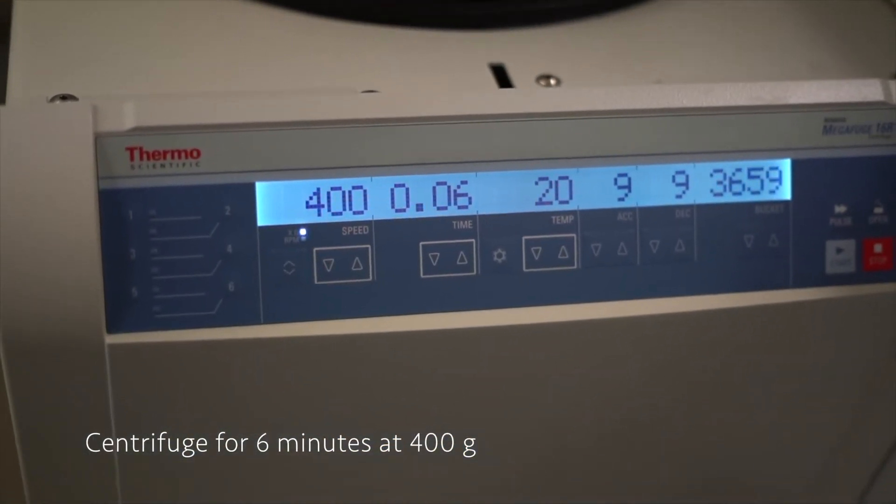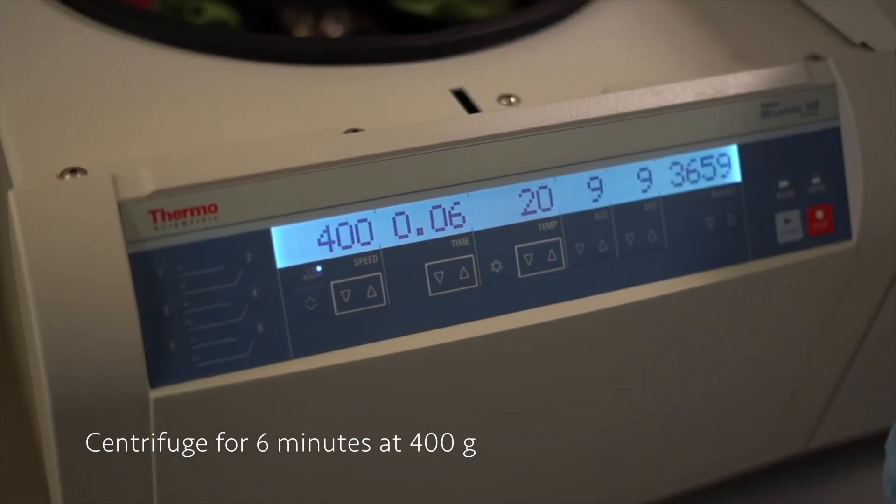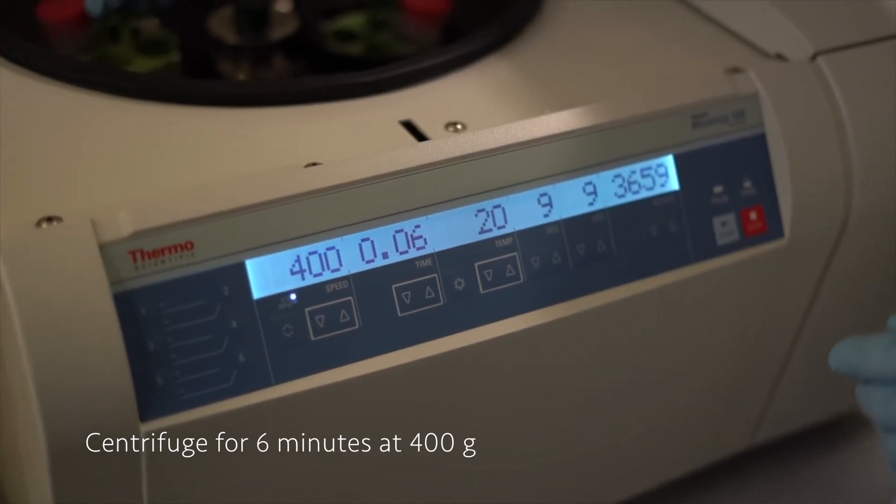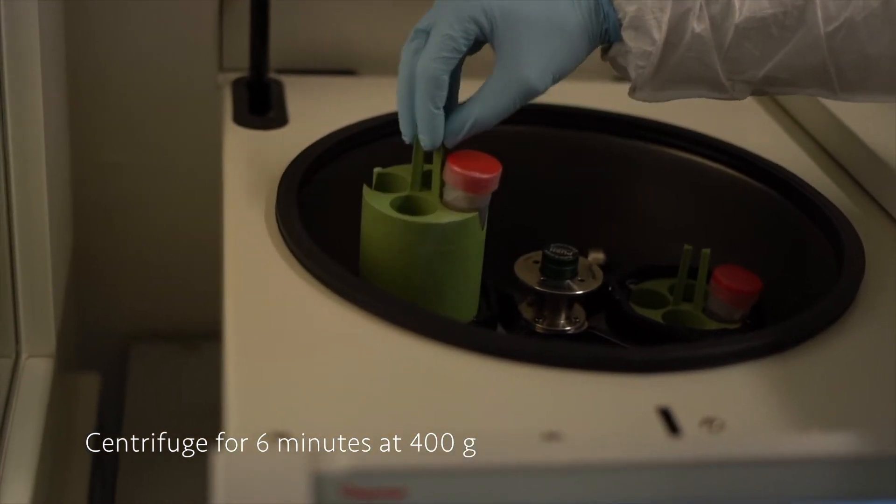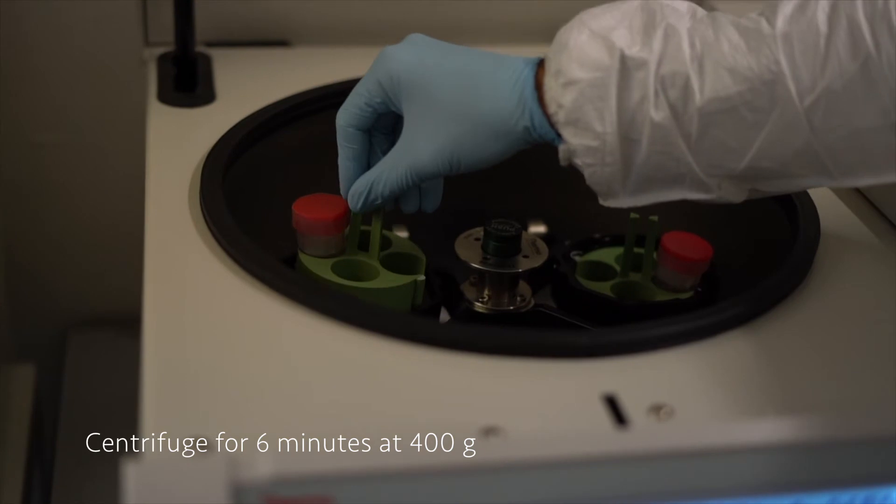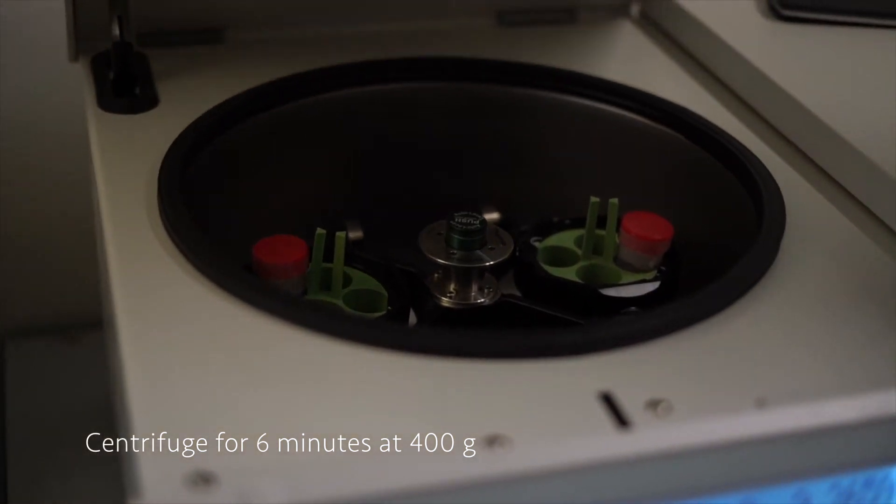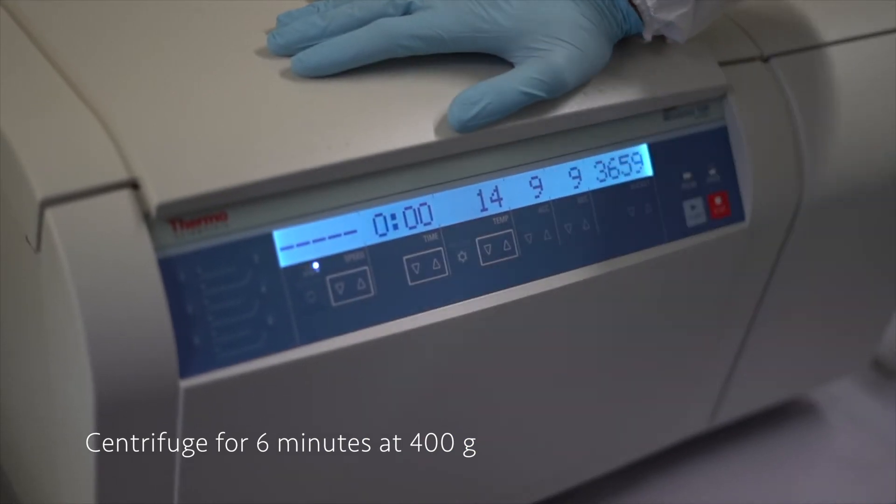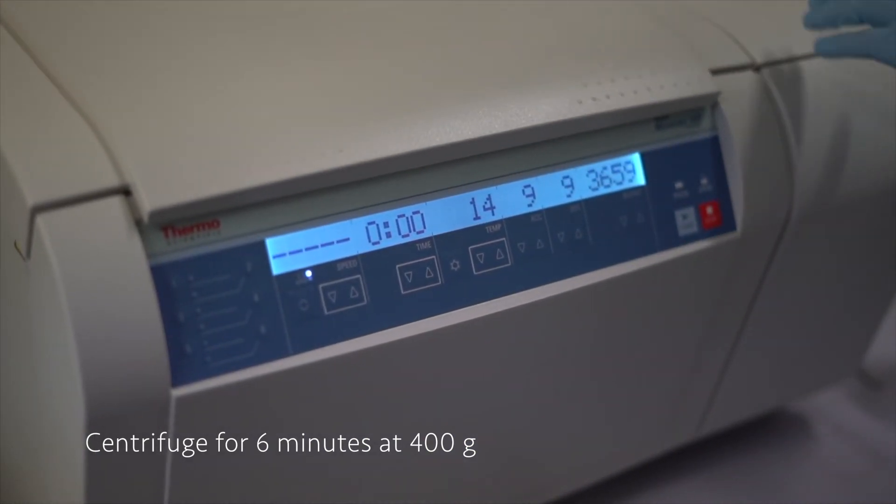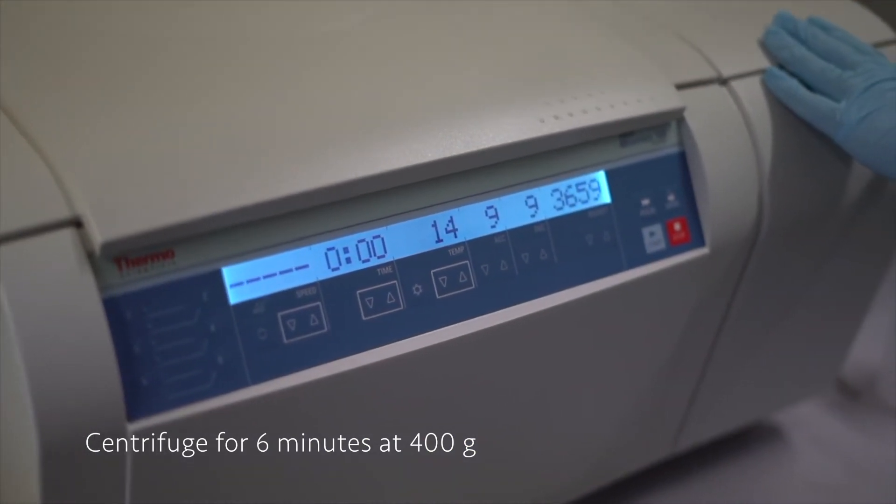Alternatively we can also centrifuge for 4 minutes. Then if we want we can turn the tubes 180 degrees and then continue for the remaining 2 minutes. We are going to centrifuge it simply for 6 minutes at 400 g, and then see if everything has flowed through the MinElute column.